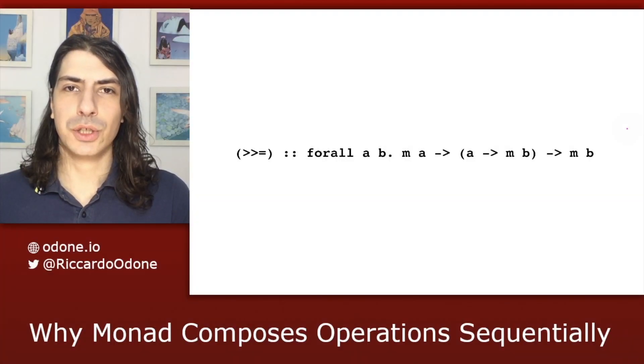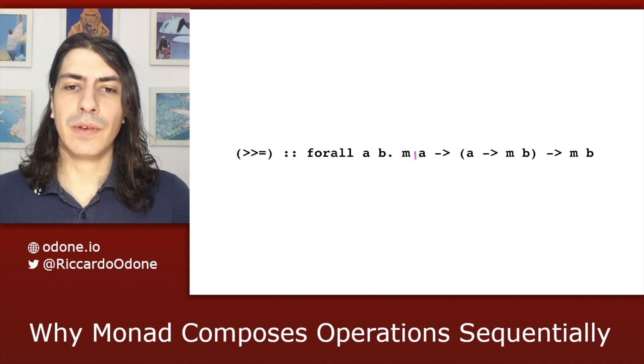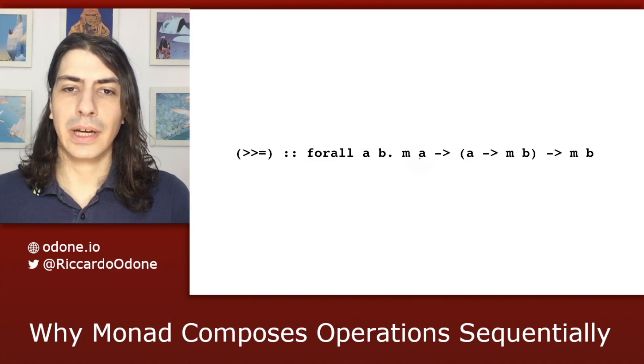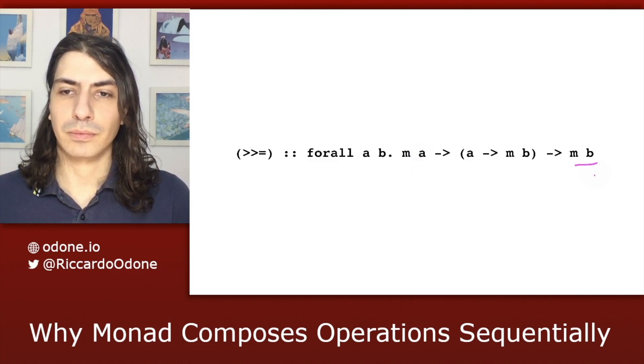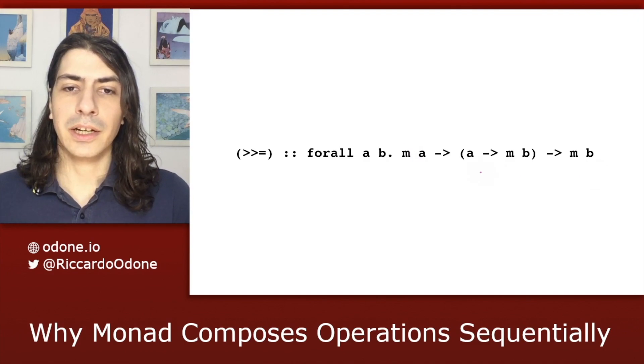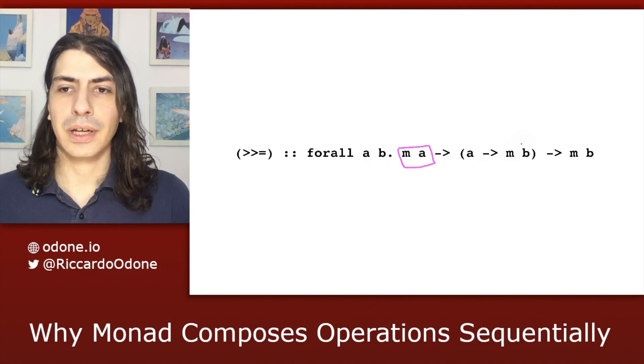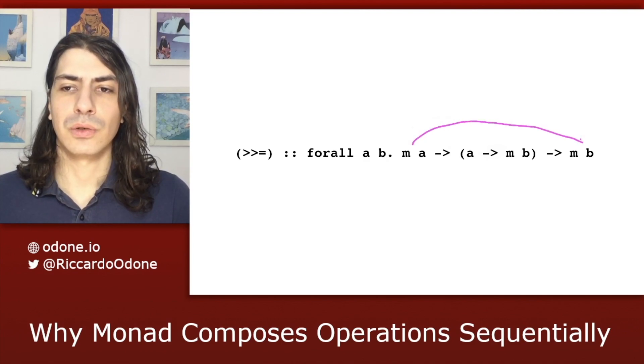We have here the type signature for bind. We start out with a value of type m of a, which is pretty much a value of type a in a monadic context m. And we want to end up in a value of type m of b. In other words, if we call this value our present value and this value here as our future value, what we want to achieve is to go from present to future.